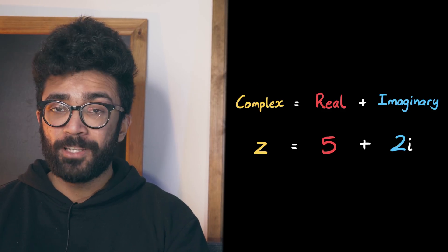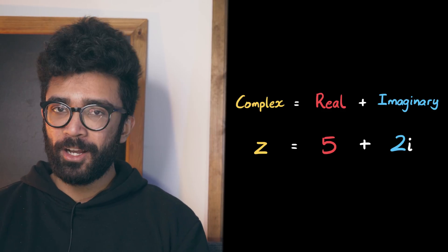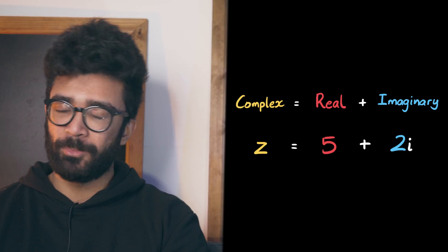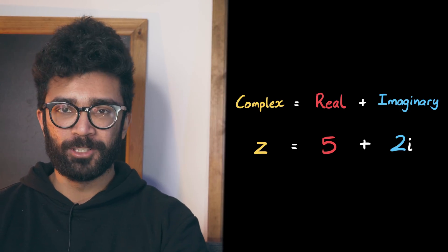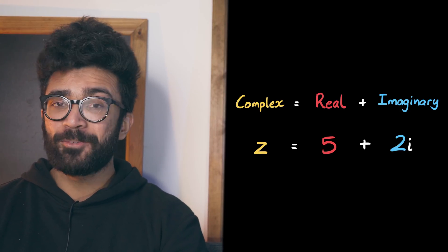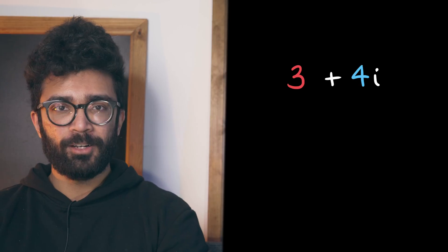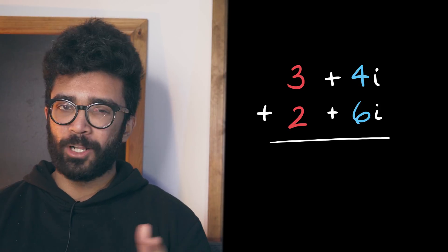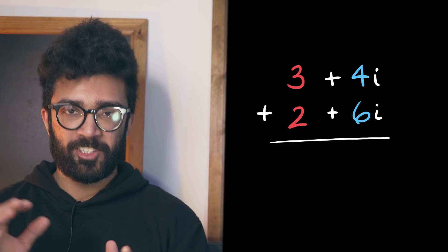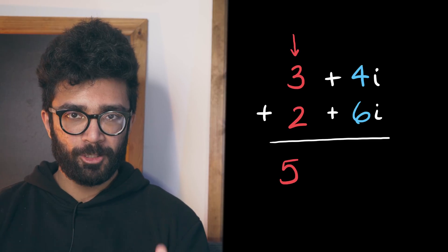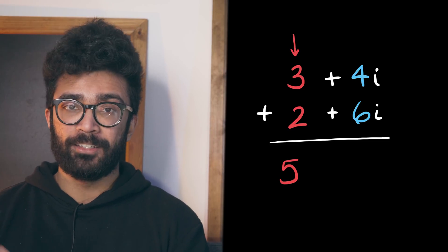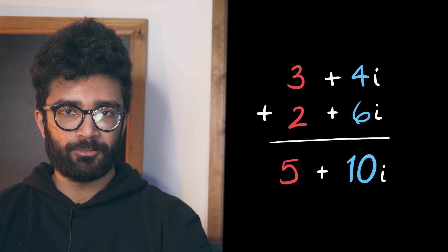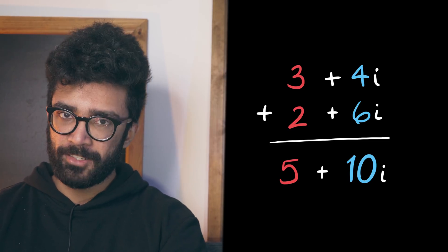We could call this combination Jeff if we wanted to, but we won't. So let's take a look at how we can combine two complex numbers. Let's say we want to find this complex number plus this complex number. Well, we simply sum together the real parts and the imaginary parts separately to give us our final result. Easy.